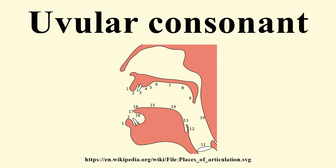The voiced equivalent of Q is much rarer. It is like the voiced velar stop, but articulated in the same uvular position as Q. Few languages use this sound, but it is found in some varieties of Persian and in several northeast Caucasian languages, notably Tabasaran. It may also occur as an allophone of another uvular consonant. In Kazakh, the voiced uvular stop is an allophone of the voiced uvular fricative after the velar nasal.